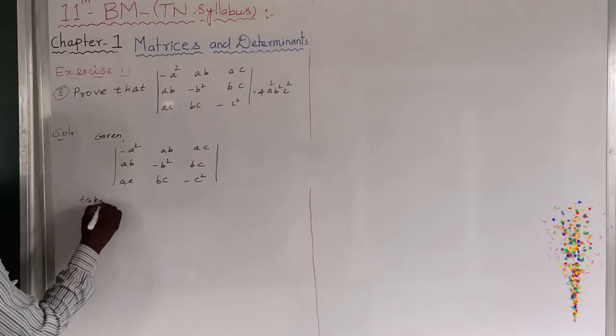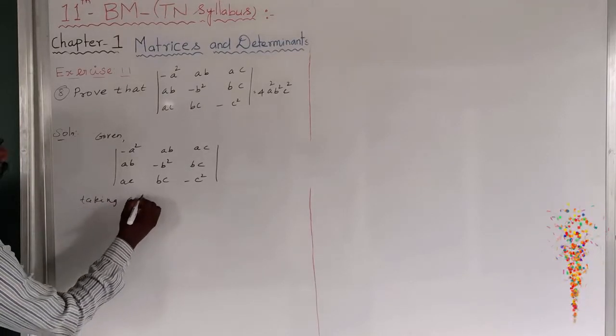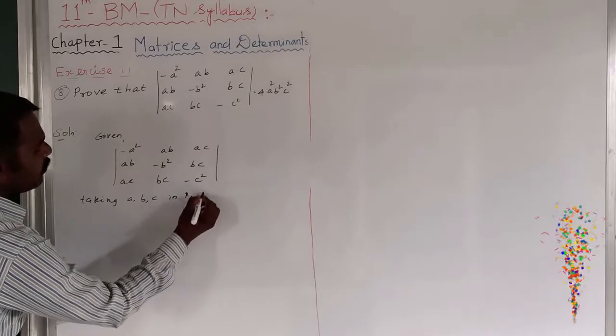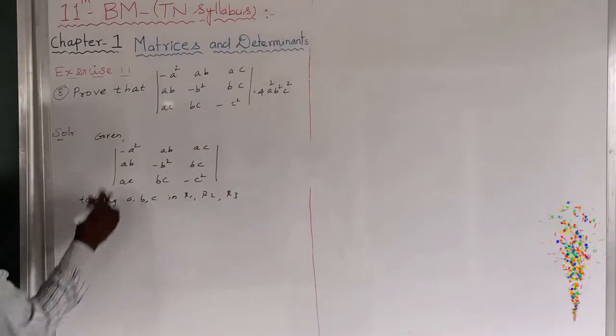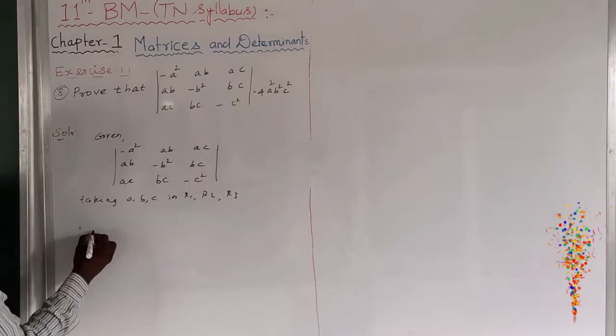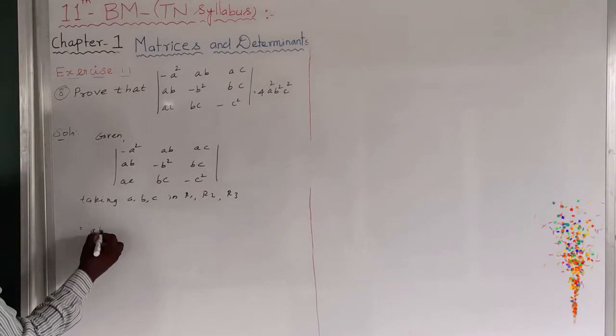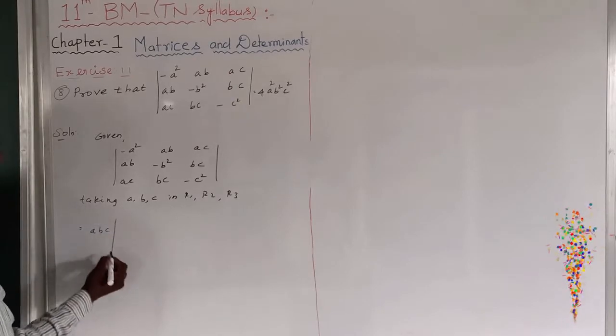Taking abc from rows r1, r2, and r3 respectively. From row 1 I will take out a, from row 2 I will take out b, and from row 3 I will take out c.